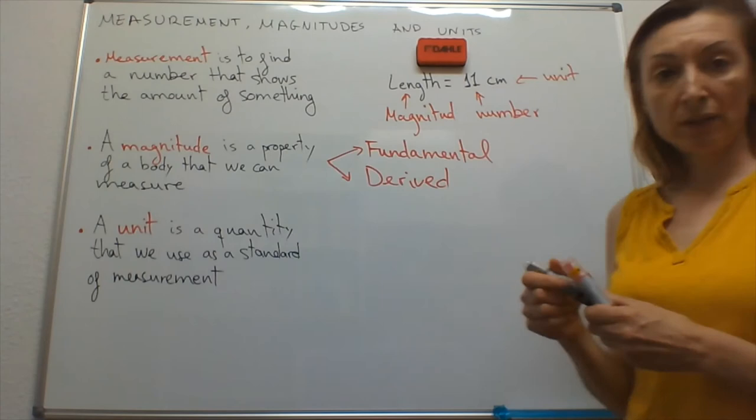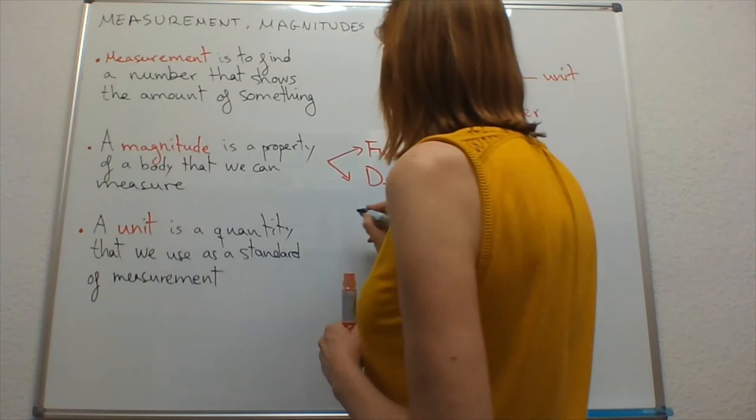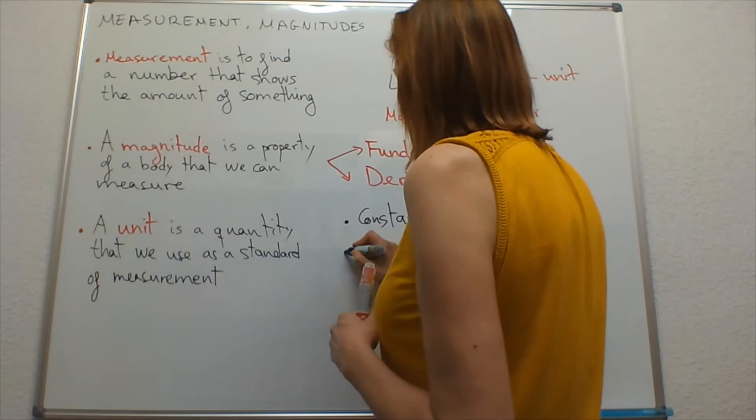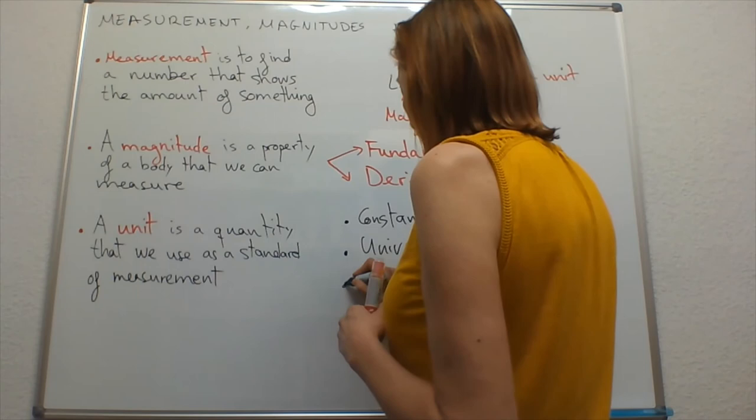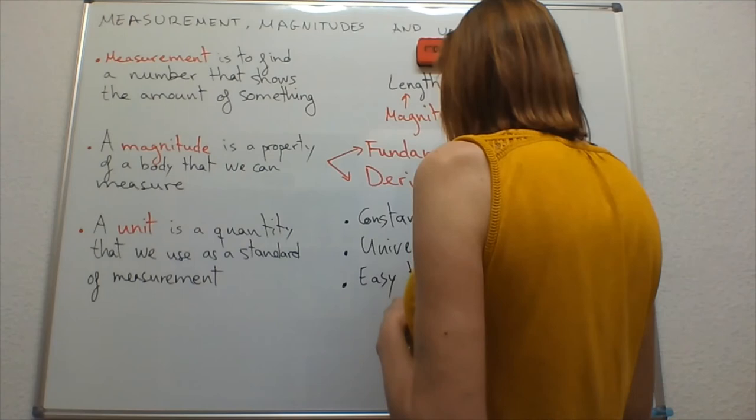And the unit, the properties of a unit are three. A unit must be constant, it must be universal, and it must be easy to reproduce.